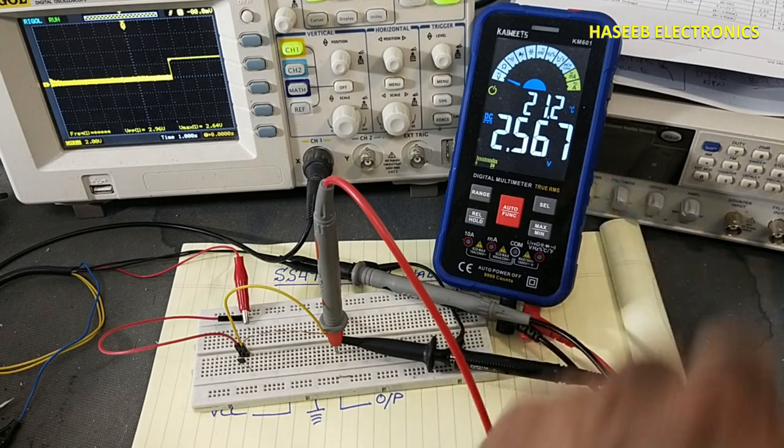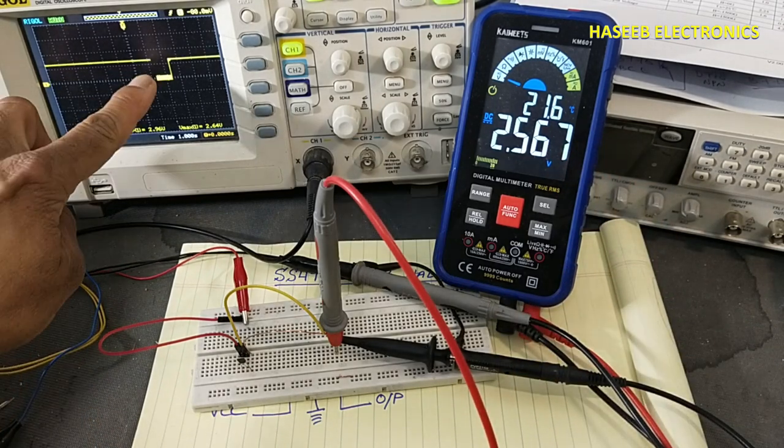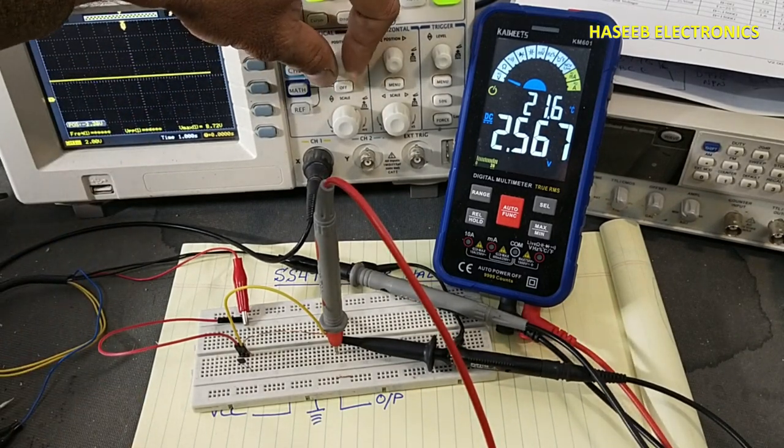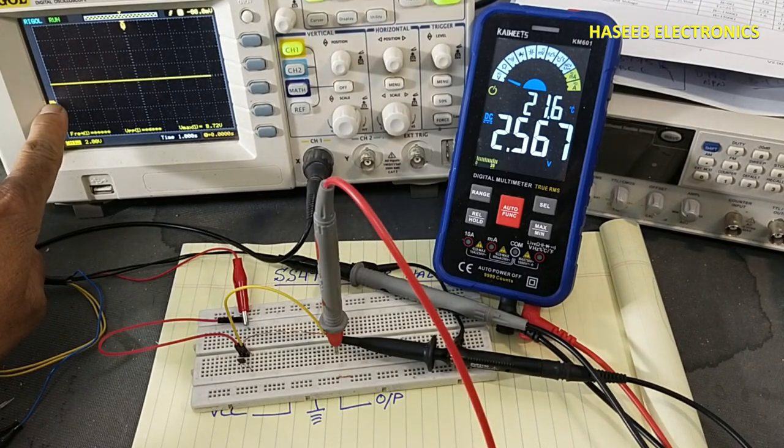Connections are ready. Now I will connect positive 5 volt. We can see 2.5 volt here, 2.5 volt. I will adjust it to zero line, so here is 2.5 volt. Normally zero line is here.